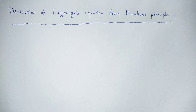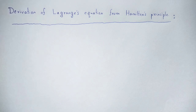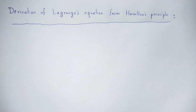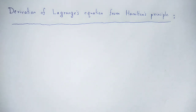The action integral is given by the integration of the Lagrangian L, d t, from t1 to t2. The initial position is at t1 and the final position is at t2.